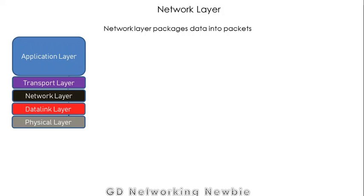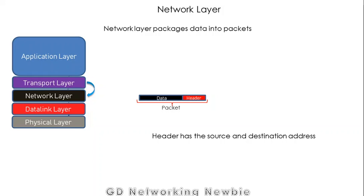Next is the network layer. The network layer packages data into packets. The transport layer segments are handed over to the network layer, which takes those segments, adds a header on top, and we call that a packet. This header contains the source and destination address, because the network layer is used to connect two different networks. Common network layer protocols are IP and ICMP.